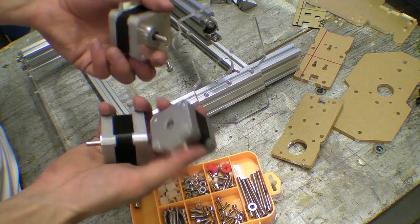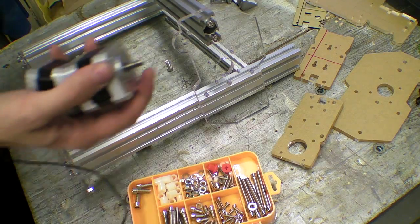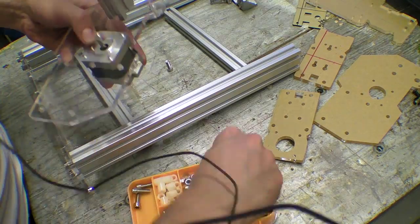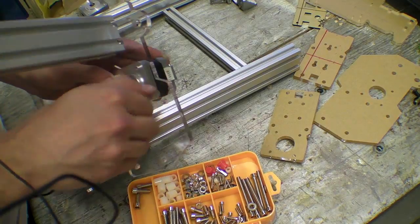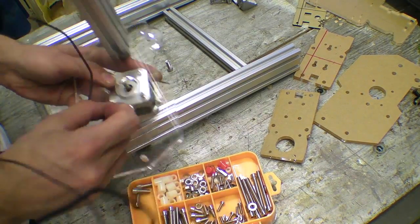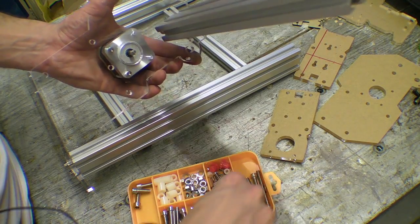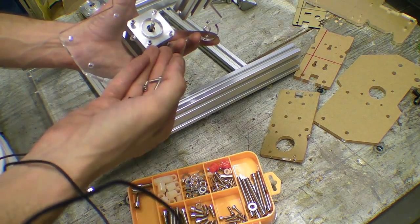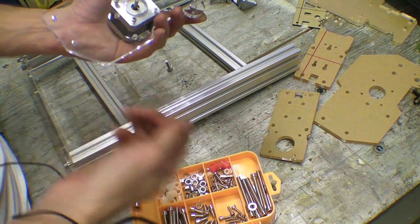I was also provided with these, I think they're NEMA 17 motors. I think I'm going to screw these on now. You've just got to use the power of deduction to work out which machine screws fit on which part of the machine. Obviously there are three stepper motors with four holes each, that means there are twelve of these.